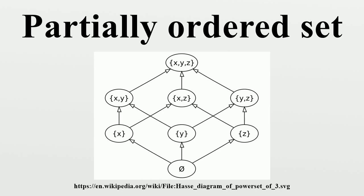Sums of partially ordered sets: Another way to combine two posets is the ordinal sum Z = X ⊕ Y, defined on the union of the underlying sets X and Y by the order A ≤Z B if and only if: A, B ∈ X with A ≤X B, or A, B ∈ Y with A ≤Y B, or A ∈ X and B ∈ Y. If two posets are well ordered, then so is their ordinal sum.